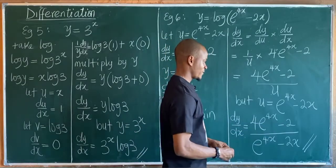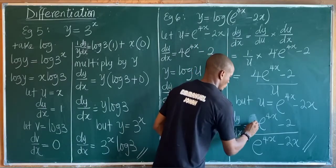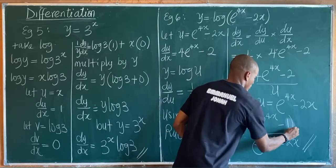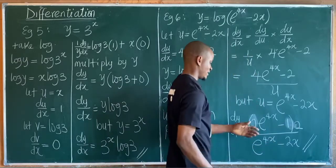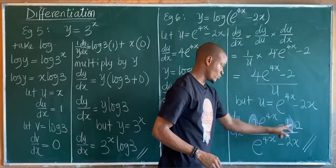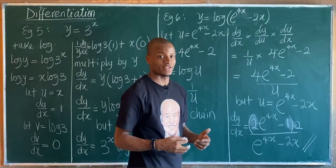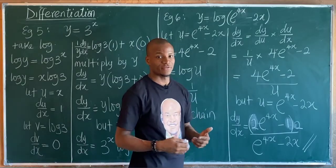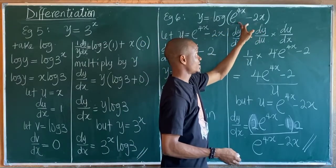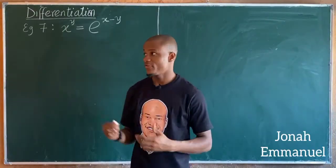You could factorize 2 from the numerator to get 2(2e^(4x) minus 1) over (e^(4x) minus 2x). You can also use the shortcut of algorithmic differentiation treated in previous classes — differentiate the inside, repeat the log argument, and get the same answer. Now let's take a seventh example.